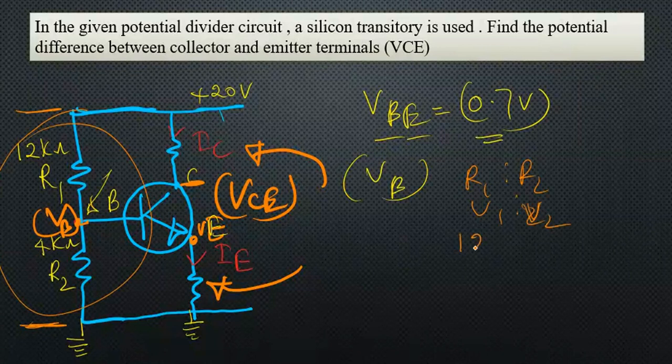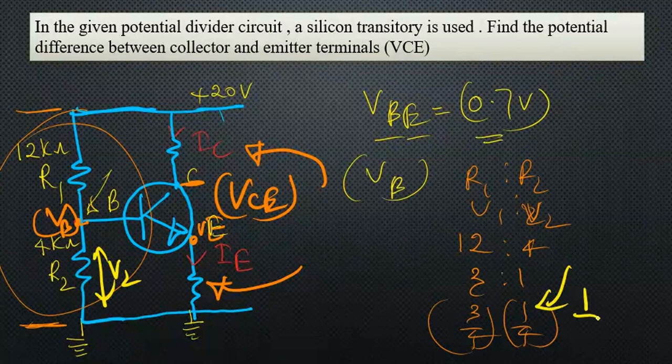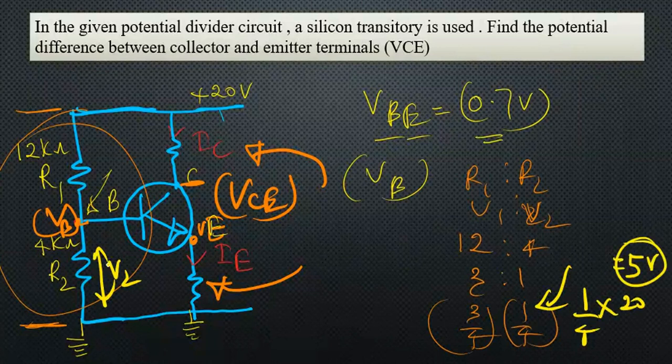The resistance ratio is 12 kiloohms to 4 kiloohms, simplified to 3 to 1 ratio. Let's take the fraction value 3 by 4, 1 by 4. To find VB, we can consider the potential difference of V2. For V2, we need to take 1/4 fraction, so 1/4 into 20—we get 5 volts.